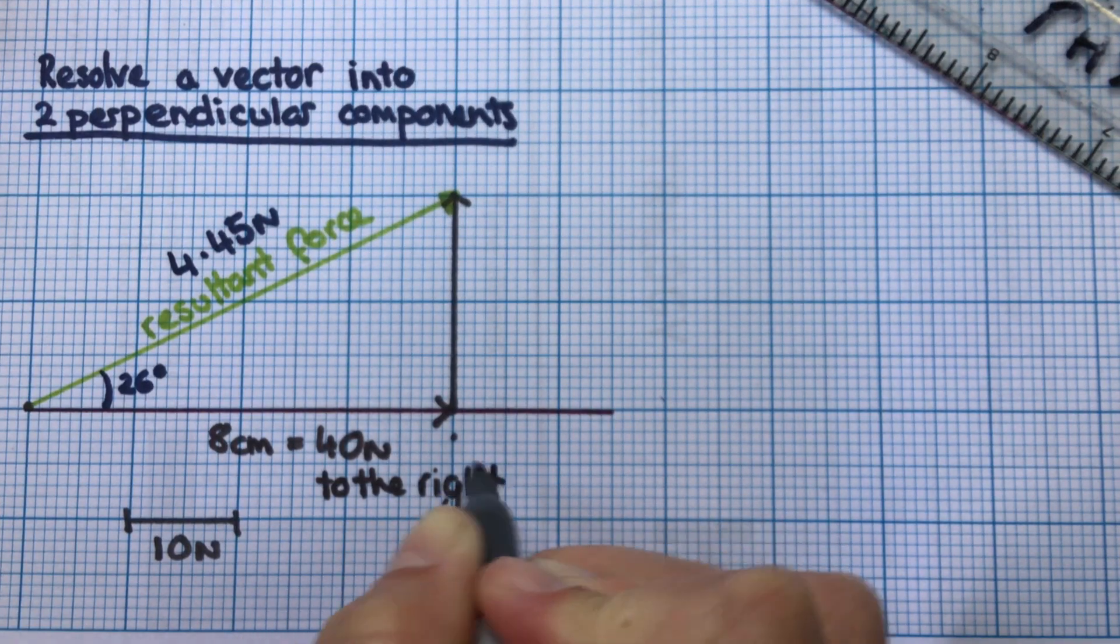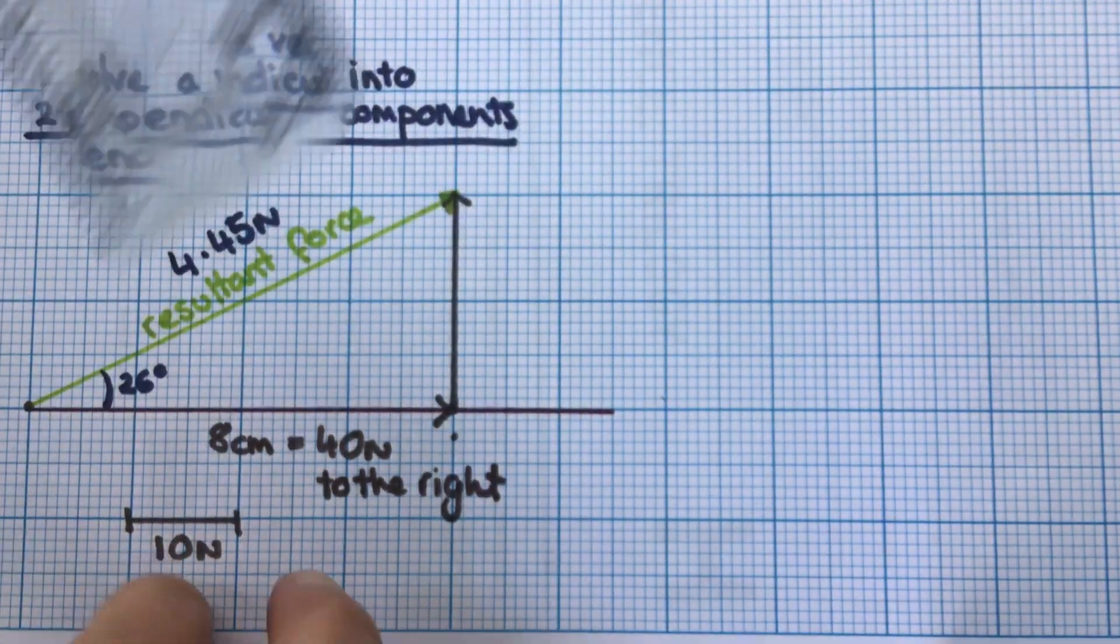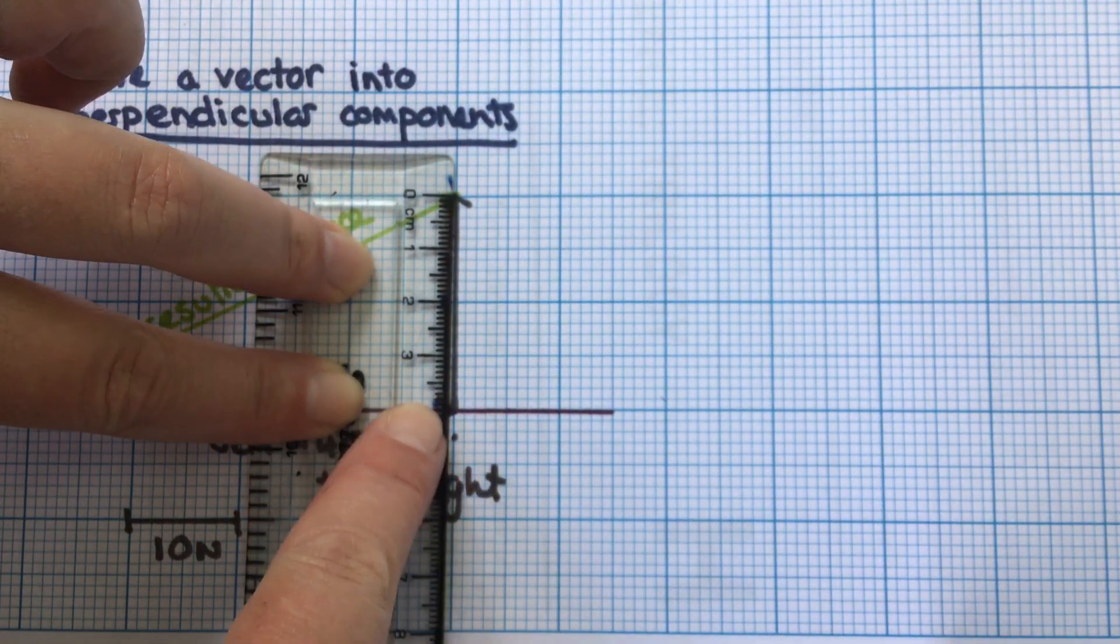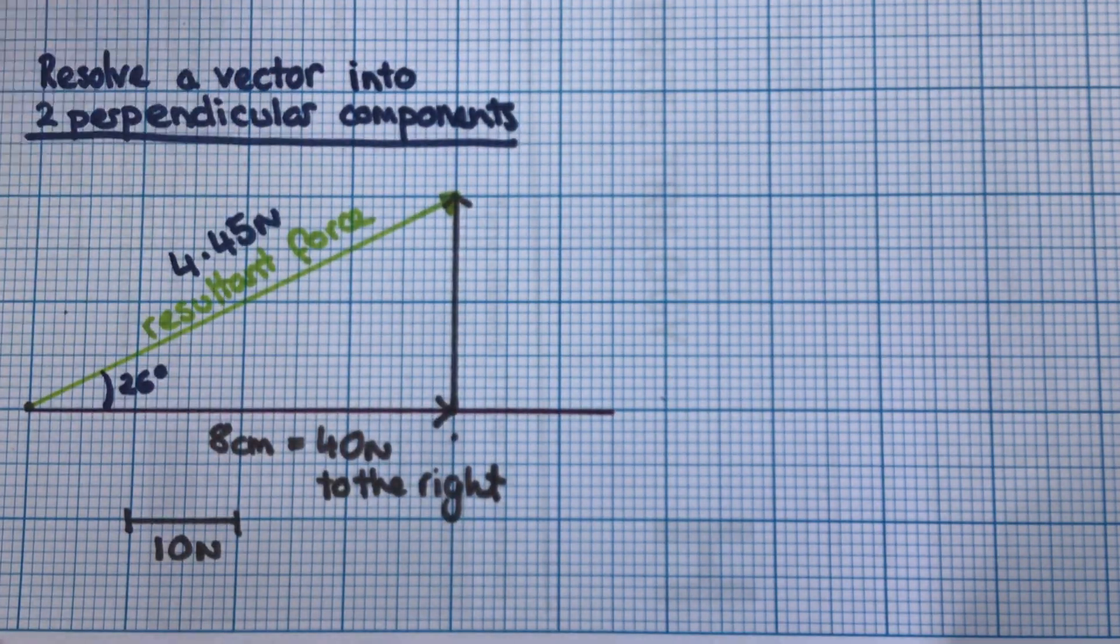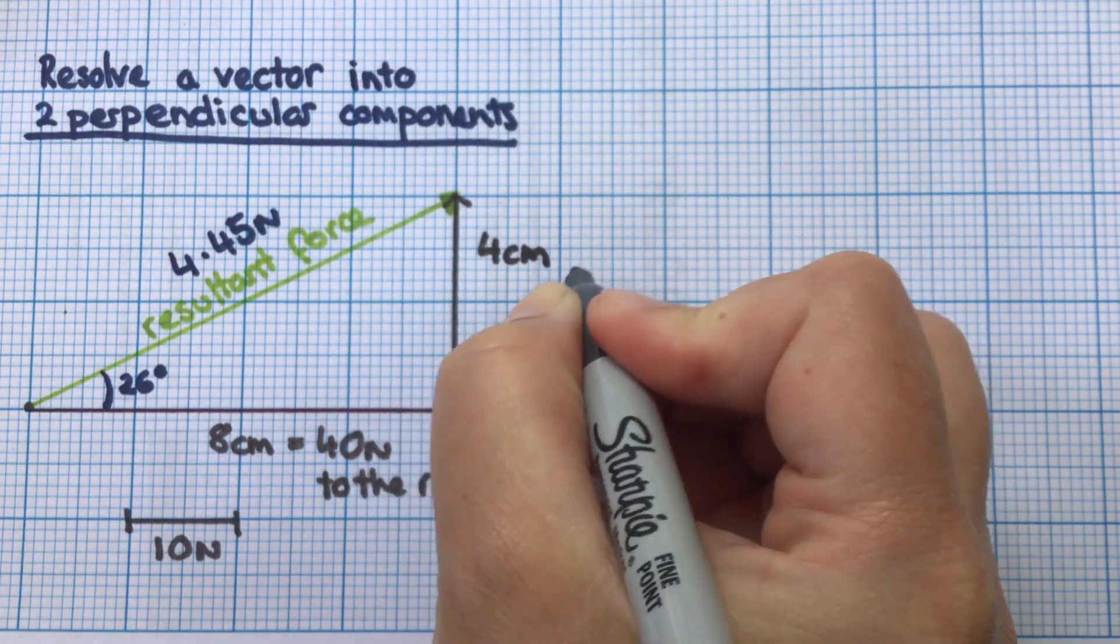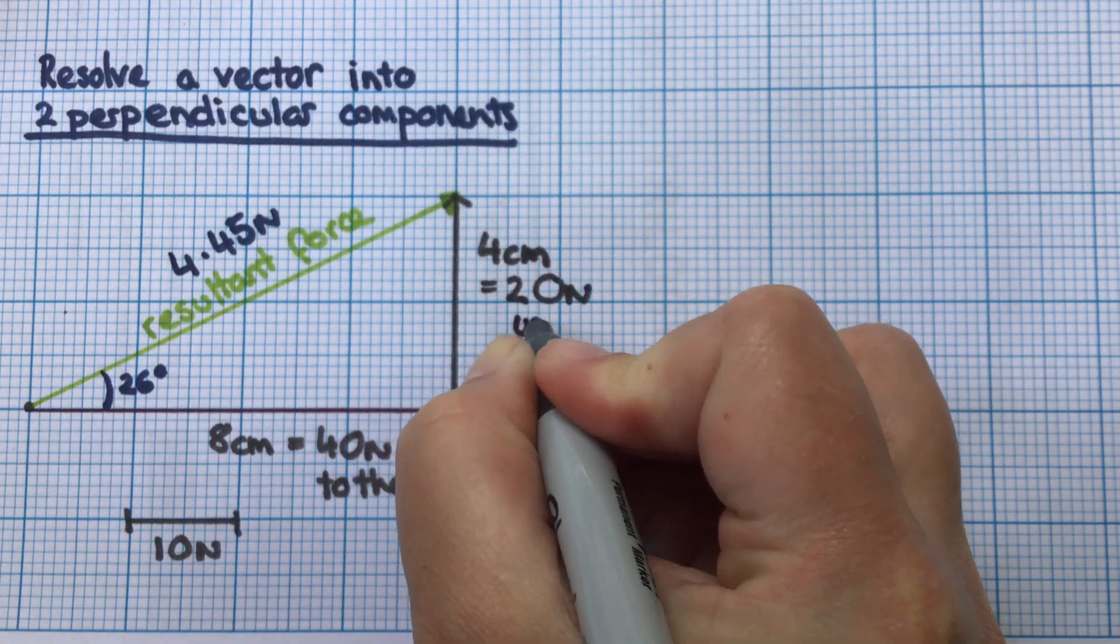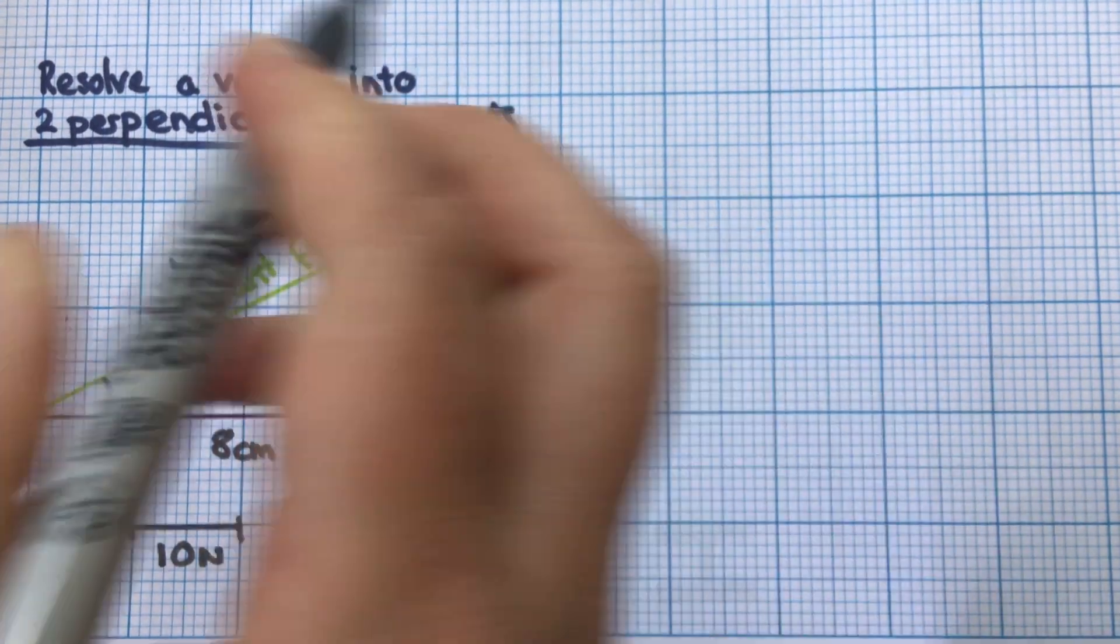Now I'll measure the magnitude of this vector. It's four centimeters, so that equals 20 newtons upwards. Here I've got magnitude and direction.